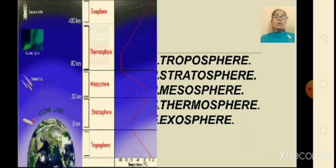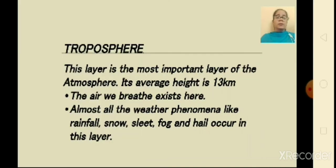Troposphere is the most important and first layer of the atmosphere. The air that we breathe exists here. All the weather phenomena like rainfall, fog, and storm occur here. Troposphere's average height is about 13 kilometers. Almost all weather phenomena — like rainfall, snow, sleet, fog, and hail — occur in this layer.